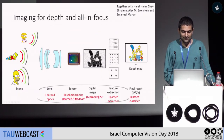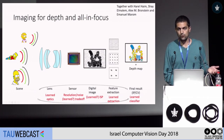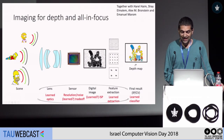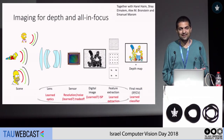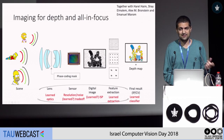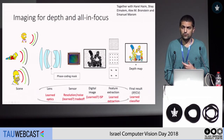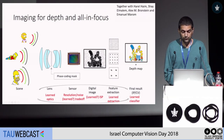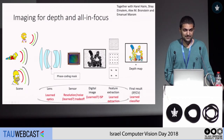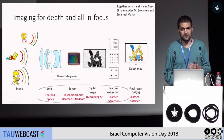What I showed so far is that we can take information from the sensor and do better. Now I will go further. Let's assume we have a scene and we want to reconstruct both the image and the depth map. For this, we want to change the sensor. Instead of designing the sensor ourselves, we add a mask to the sensor — a phase mask with some parameters — and we let a neural network learn the parameters of this mask together with the reconstruction algorithm that tries to recover the all-in-focus image and the depth map.